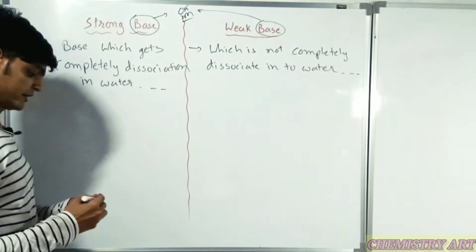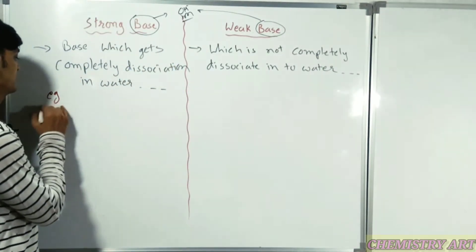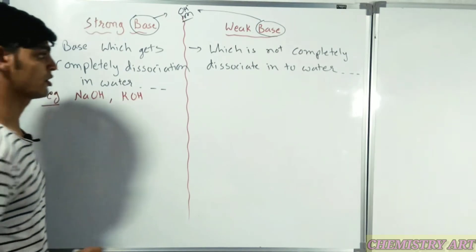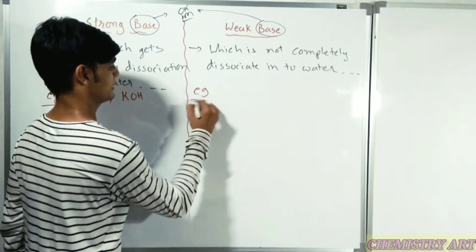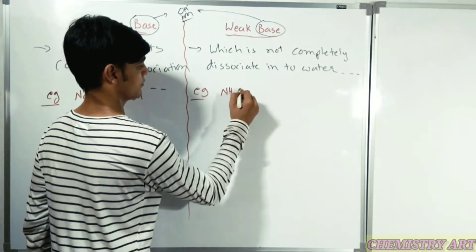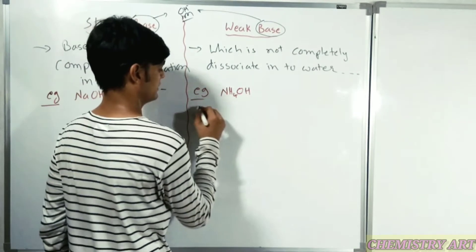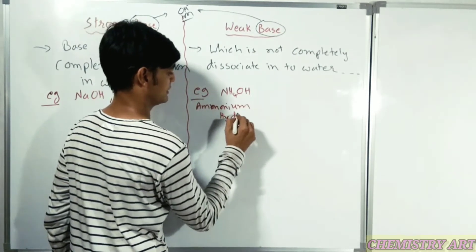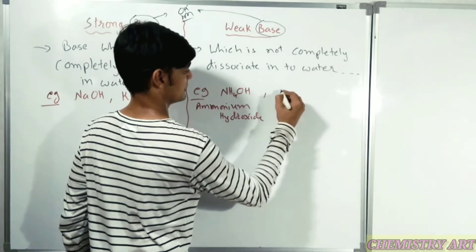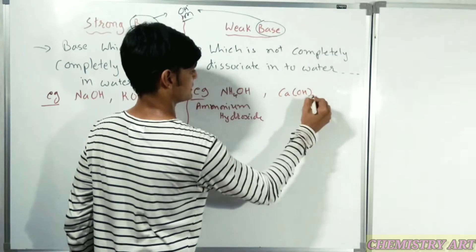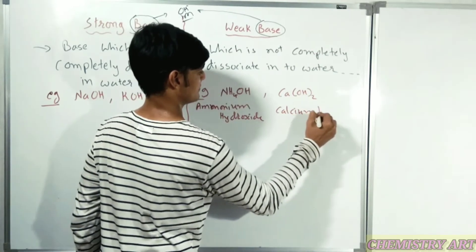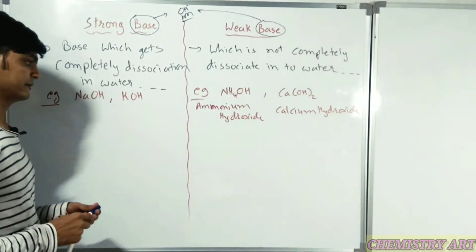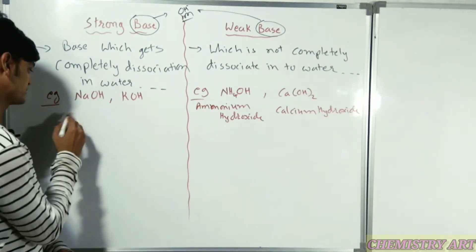Examples of strong bases: NaOH and KOH. Examples of weak bases: NH4OH - ammonium hydroxide - and Ca(OH)2 - calcium hydroxide.